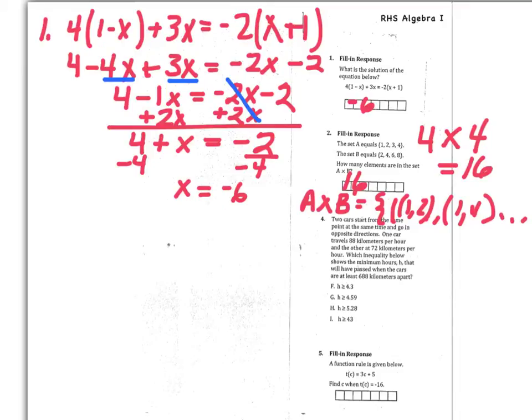For number 4, you have two cars traveling in opposite directions. And we want to know how long it will take for them to be at least 688 kilometers apart. And so what we're going to use partially is the fact that distance is equal to rate times time.